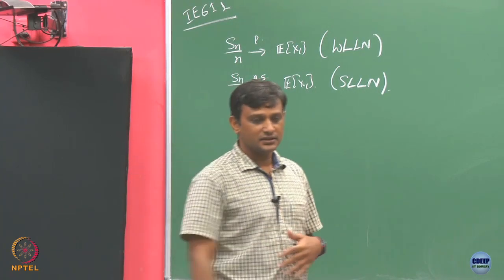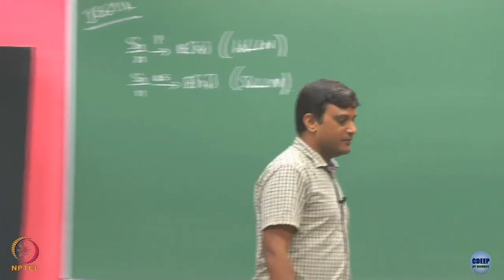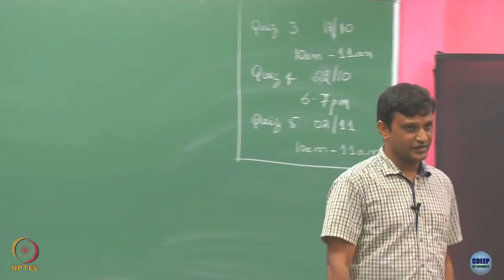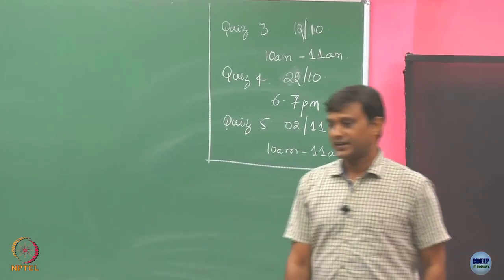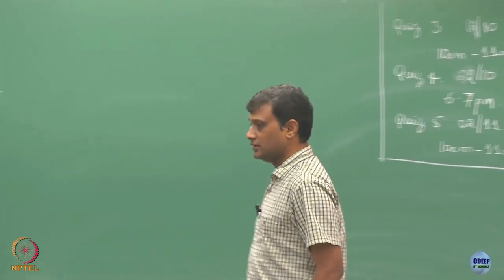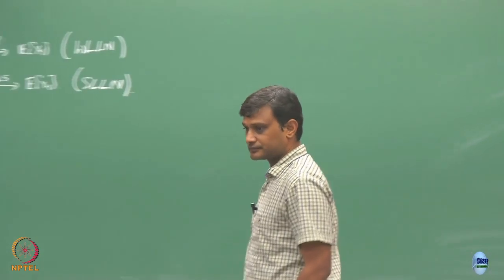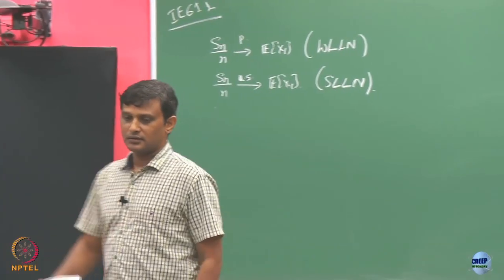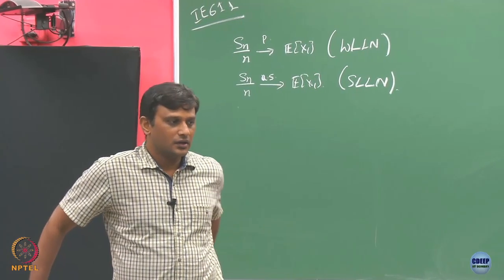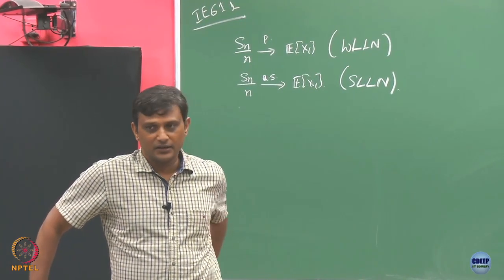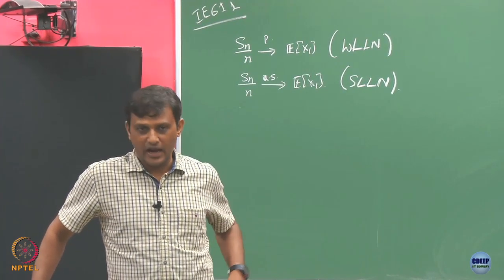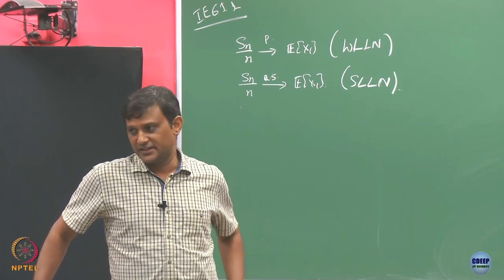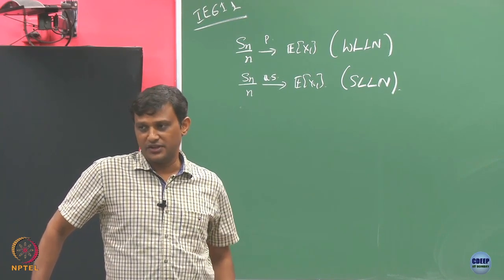These limiting distributions are very important in applications. Can somebody think of why it is so? Why these results are very useful - can you think of an example why this should be useful?